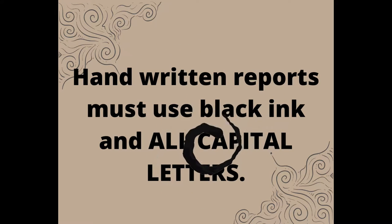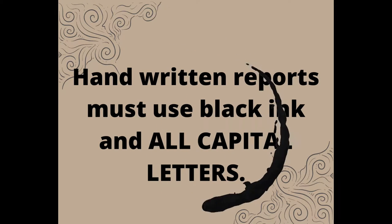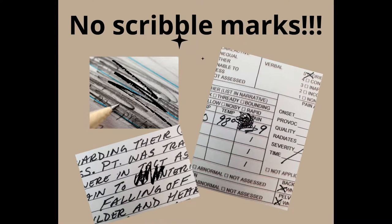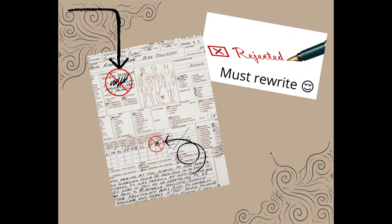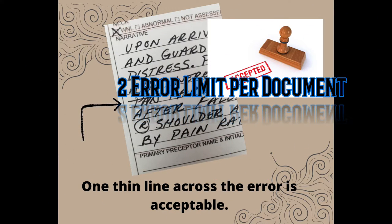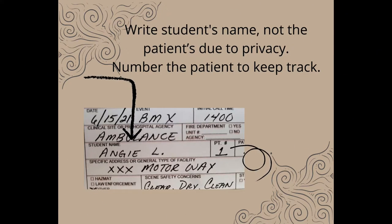Handwritten PCRs must have black ink with capital letters. Studies show that writing in all capital letters improves readability and legibility. Scribble marks and scratch marks are not allowed to cover up errors. Documents with more than one scribble mark will be rejected and the student will be required to rewrite and resubmit the PCR. If a student makes an error, it is acceptable to place a thin line across the word or set of words, as long as the word beneath is visible, but this is only limited to two errors per document.